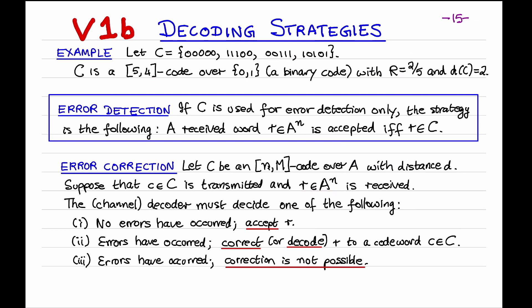So the channel decoder must decide one of the following. First, it could conclude that no errors have occurred and it accepts R as the transmitted codeword. Secondly, it could conclude that errors have occurred, and now it tries to correct or decode R to some codeword C. The question then is which codeword C should R be decoded to?